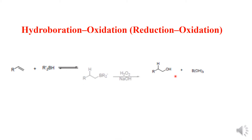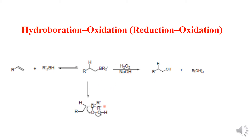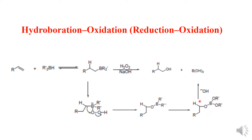In the intermediate step, reduction happens — the double bond converts to a single bond where oxidation state decreases, called reduction. Then in the influence of H2O2 and OH, the BR2 converts to OH. The boron reacts with H2O2 to give an intermediate, where migration of the R group from boron to O occurs, and in presence of OH minus we get the alcohol.